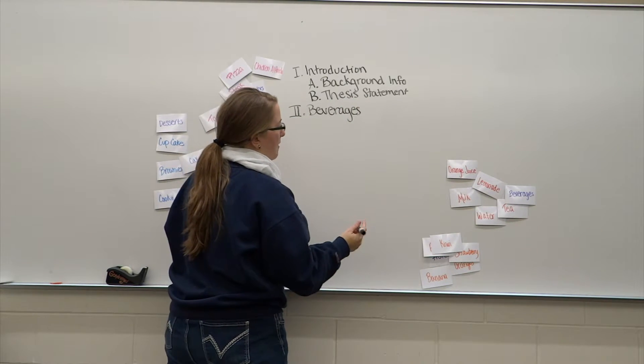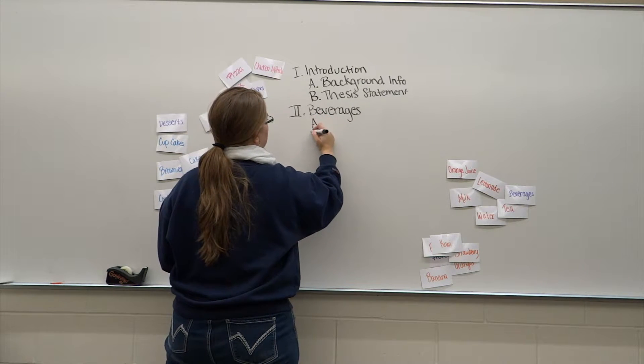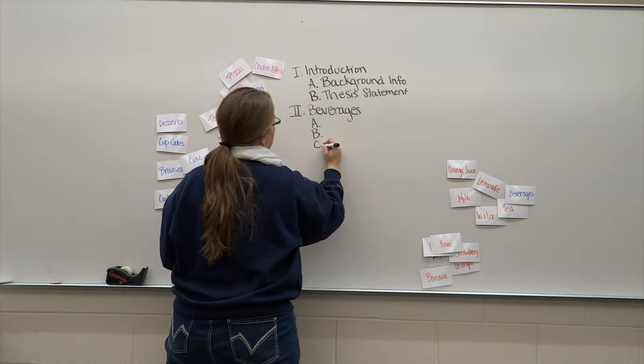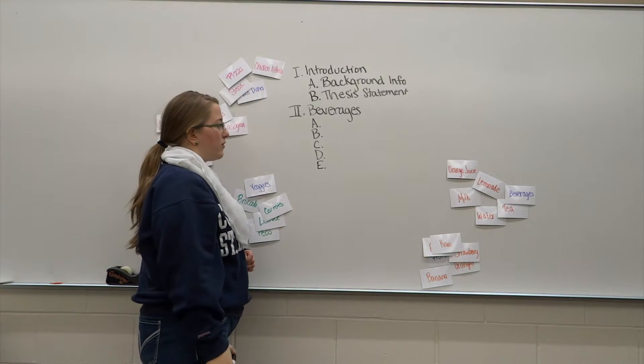And then I have five of them. So I'm going to A, B, C, D, E. I will list them under beverages.